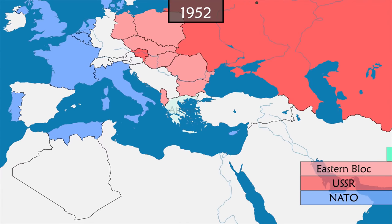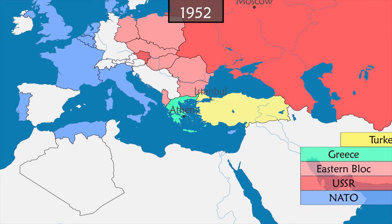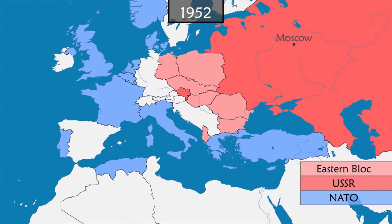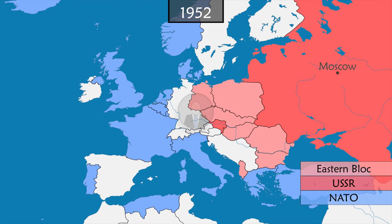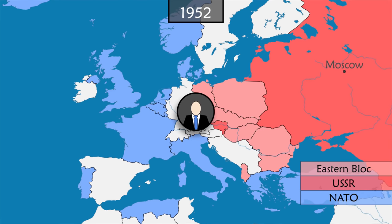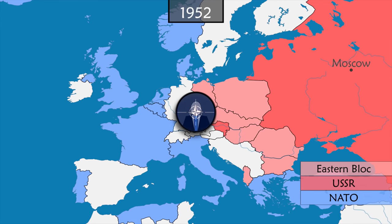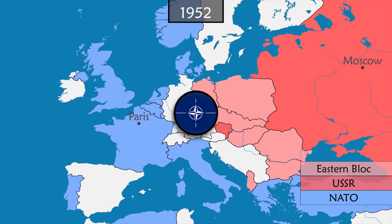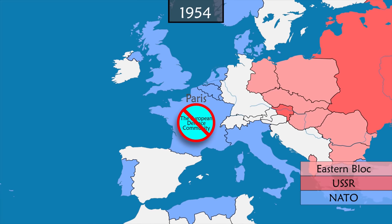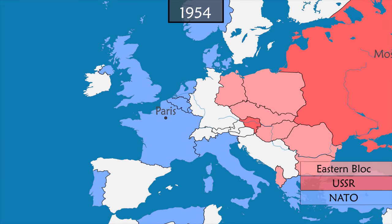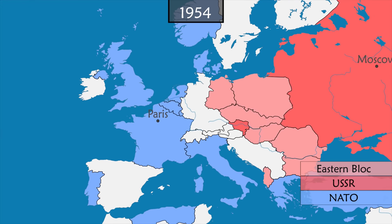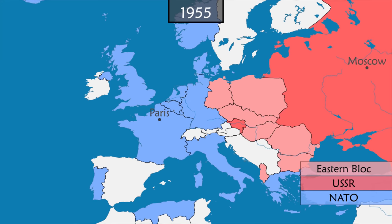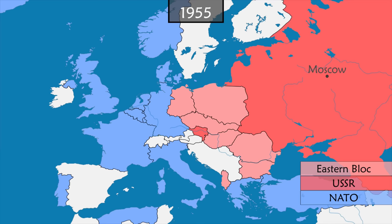In 1952, Greece, emerging from a civil war, and Turkey, turning towards the Western camp, join NATO. The same year, the alliance creates the position of Secretary General, who becomes the highest representative of the alliance. NATO headquarters, based in London for three years, is moved to Paris. After negotiations, France finally authorizes the re-armament of West Germany and its integration into NATO, which becomes official on May 6th, 1955.